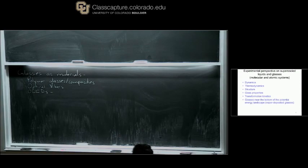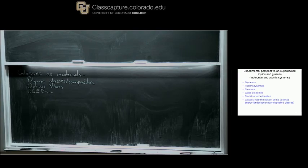OLEDs — organic light-emitting diodes. If you have a smartphone that's not an Apple product, your display is almost certainly an OLED display. The active elements are vapor-deposited organic glasses. These are the things that are conducting electrons and holes and allowing recombination on a molecule that makes the color that you see in your display. And this will come up again in lecture three.